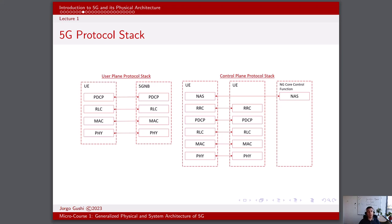The user plane protocol stack is primarily composed of the following layers. We have the application layer, or layer 7, which deals with user applications and services, providing interfaces for various applications to access network services — examples include web browsers, streaming services, and VoIP apps. The transport layer, or layer 4, is responsible for end-to-end communication and ensures reliable and ordered data delivery between sender and receiver. In 5G, UDP and TCP are commonly used transport protocols.